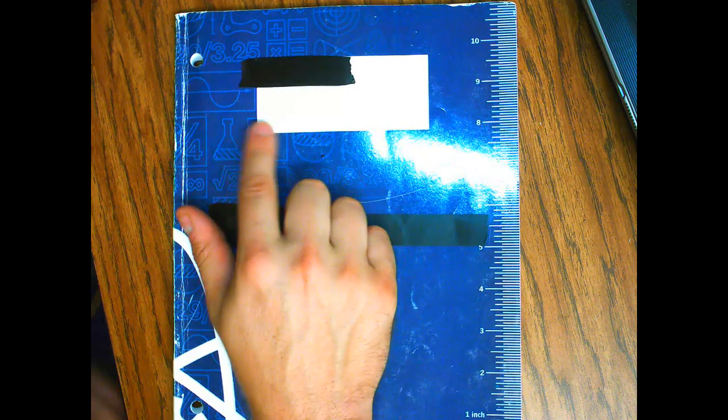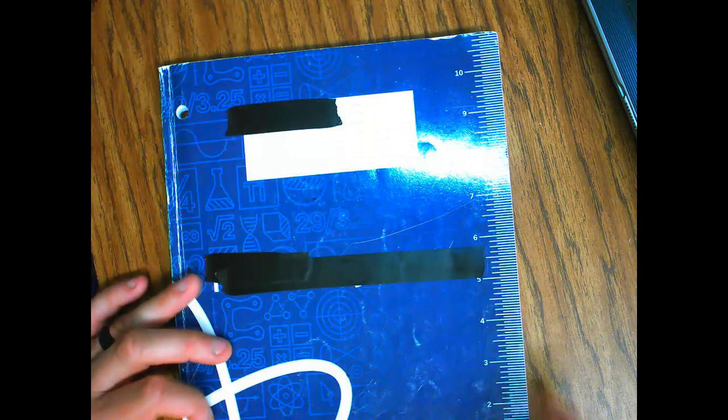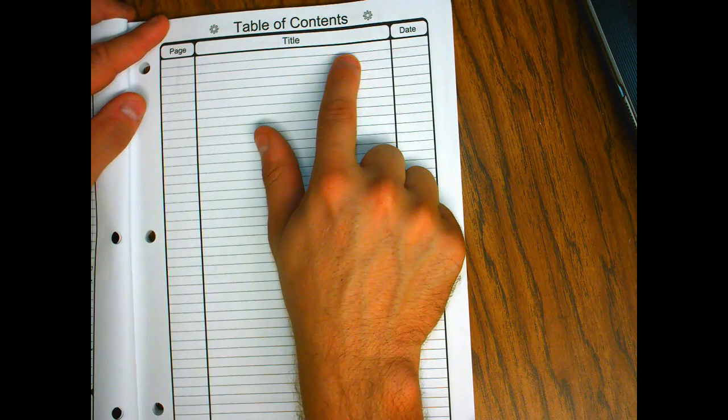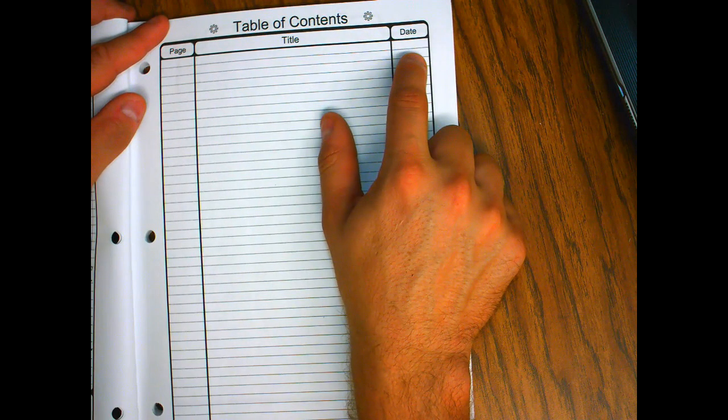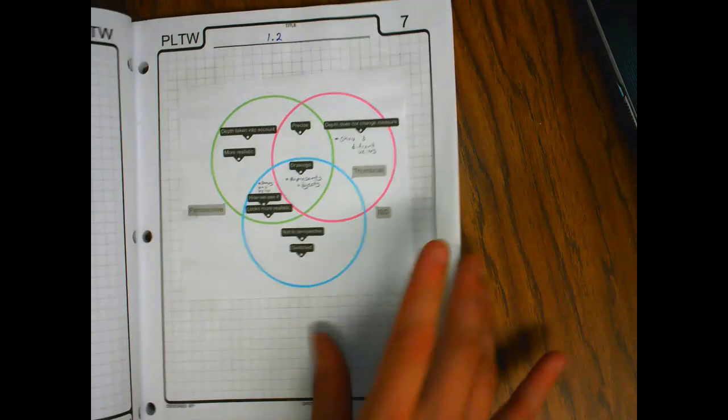All right, today we're going to be looking at engineering notebooks and sketches. This is my engineering notebook. On your engineering notebook, somewhere either in this area or maybe up here, there will be a spot for your name, class number, and things like that. If you look on the inside, you're going to have a table of contents. The table of contents has page number, the title of whatever is on that page, and then the date - really important for going back and finding your own work.